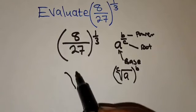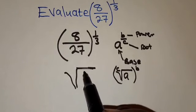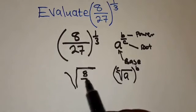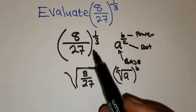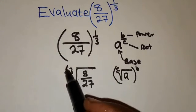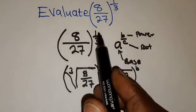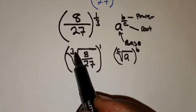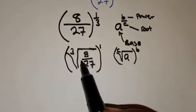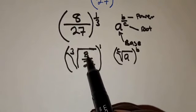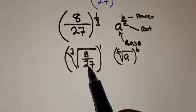So in this case, we are going to write this. We have the base 8 over 27. Our C is 3, so we're going to put 3 here. And then everything is being raised to the power 1. So because there is a 3 here, it means that they want you to find the cube root of 8 over 27.